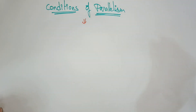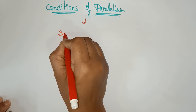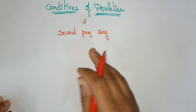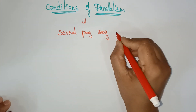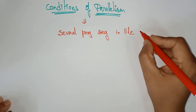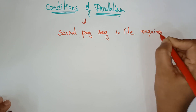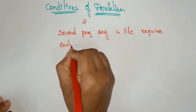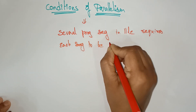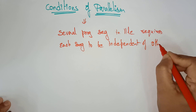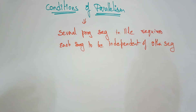Actually, the ability of executing several program segments in parallel requires each segment to be independent of the other segment. Whenever one segment is independent of another segment, then only they can execute in parallel.